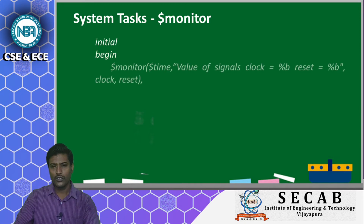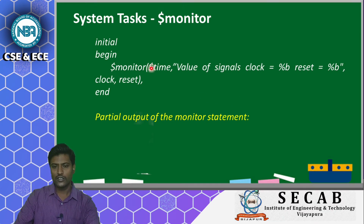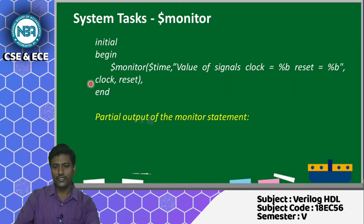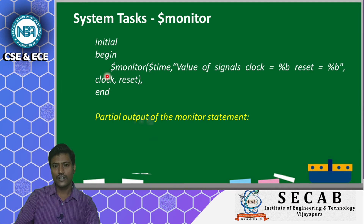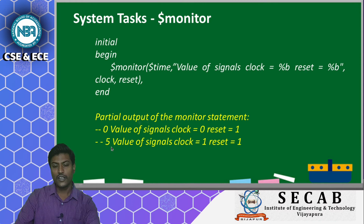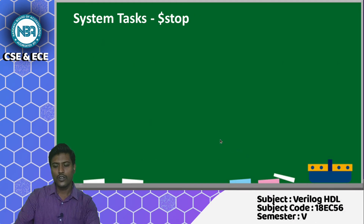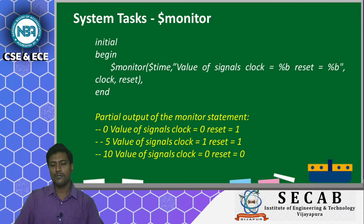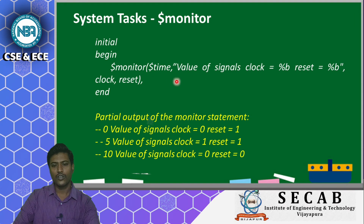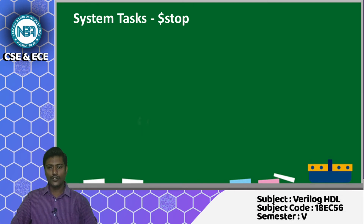Here is an example: $monitor($time, "value of signals: clock = %b and reset = %b", clock, reset). This monitors two variables: clock and reset. At time 0, clock=0, reset=1; at 5ns, clock=1, reset=1; at 10ns, clock=0, reset=0. Every time values change, $monitor displays the statement. This covers $display and $monitor; now let us look at $stop and $finish.